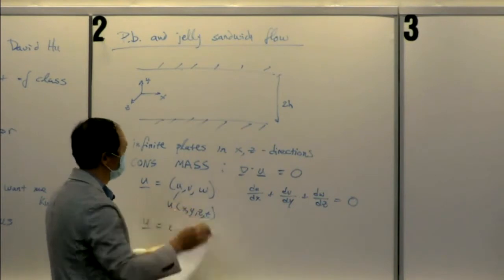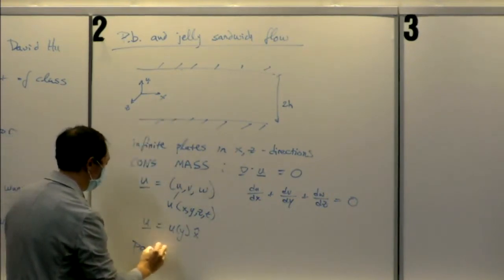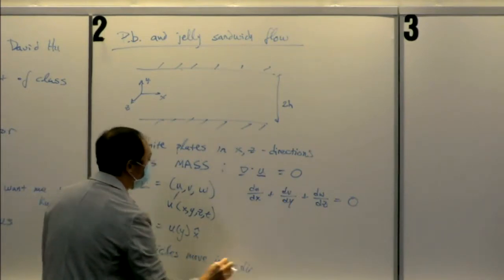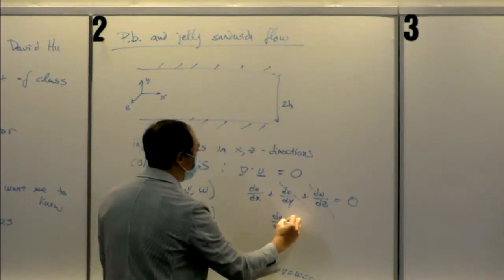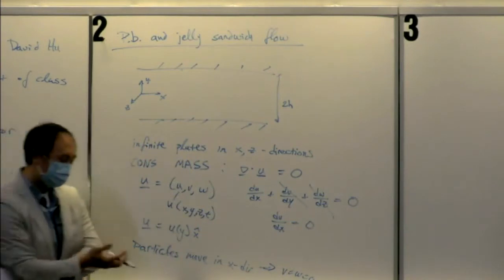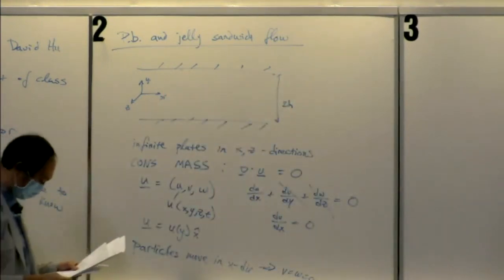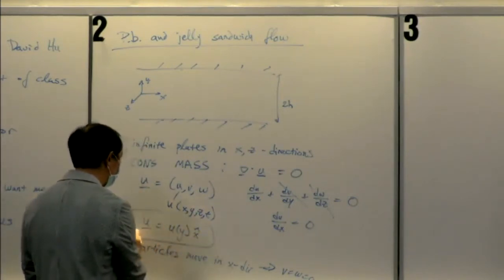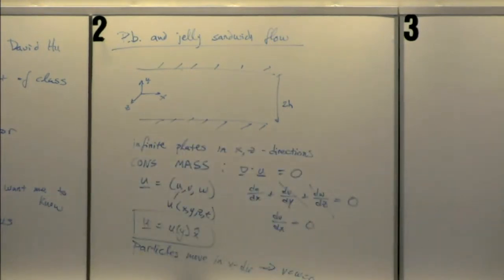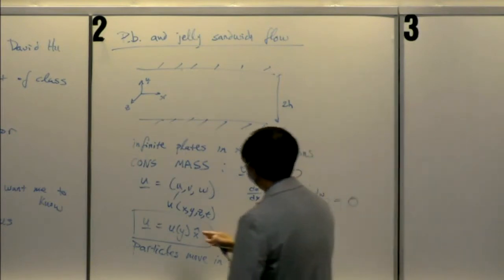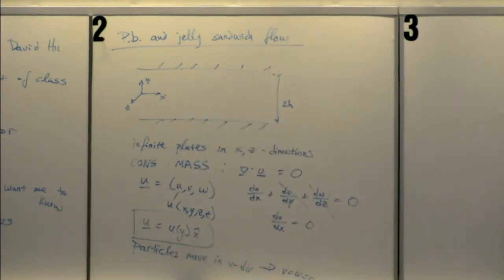We've already said that particles move in the x-direction only. If particles move in the x-direction, that means v equals w equals zero. That means u does not change with x — the derivative of u with respect to x is zero. Whatever profile we create is valid for any point x. Saying the particles move in the x-direction only is equivalent to saying u is not a function of x. And since u is infinite in the z-direction, the only variable left is u changing as a function of y.